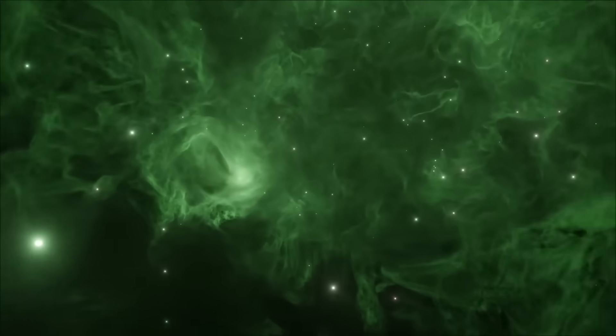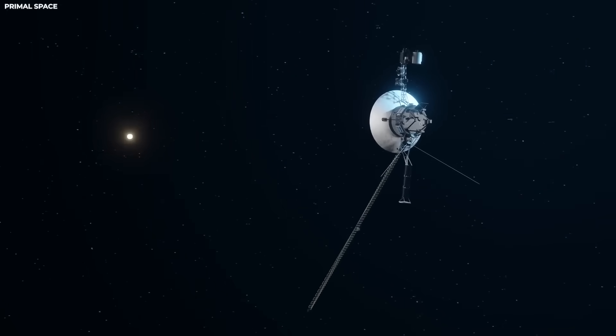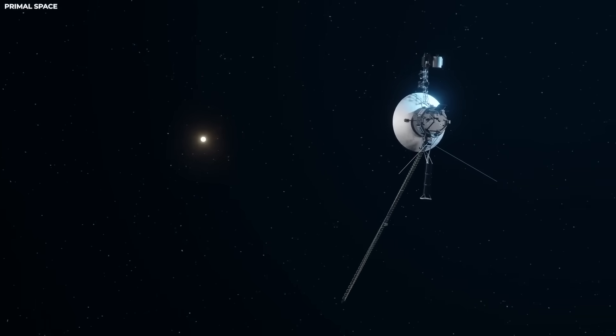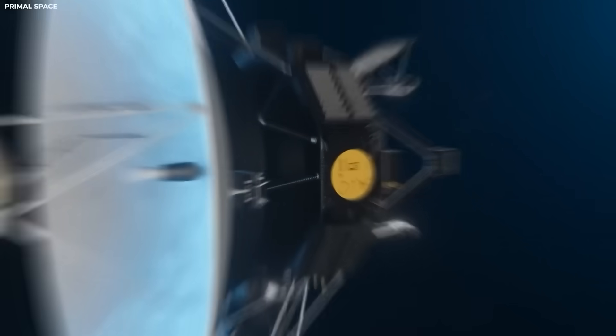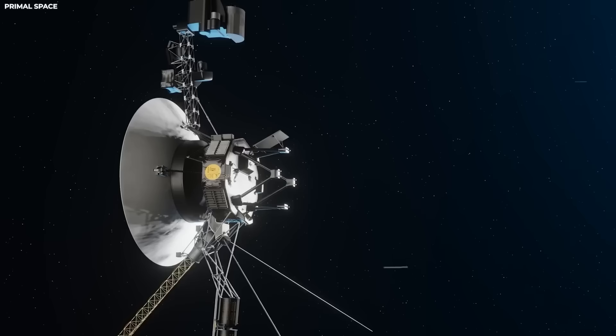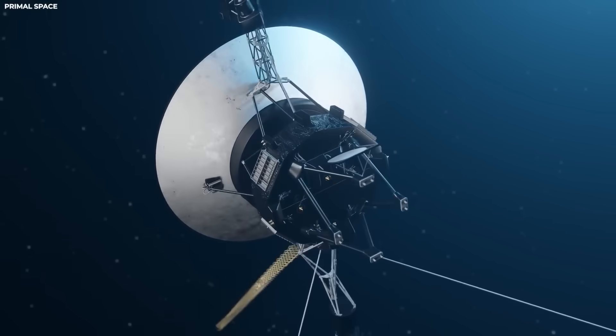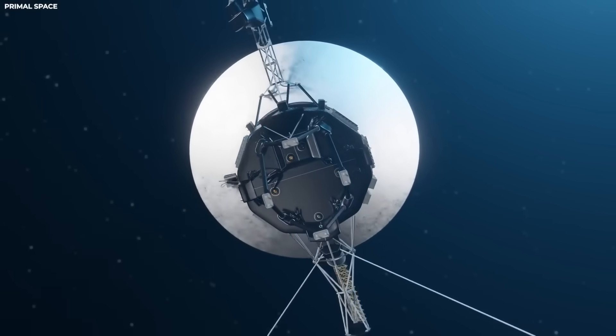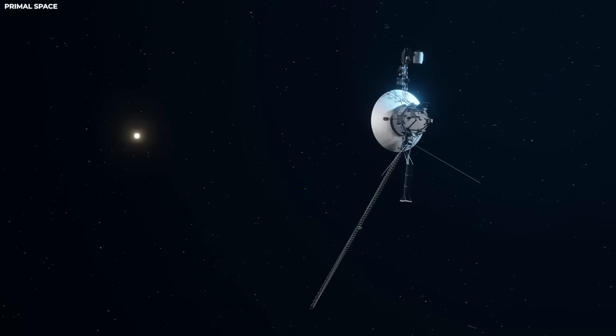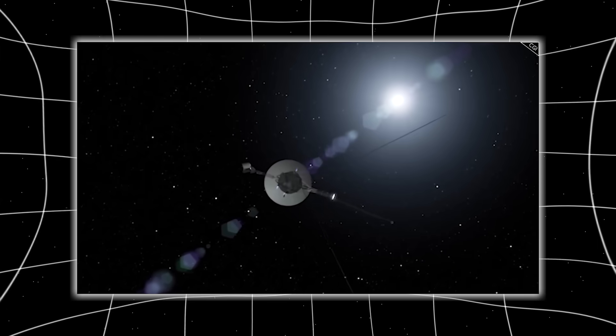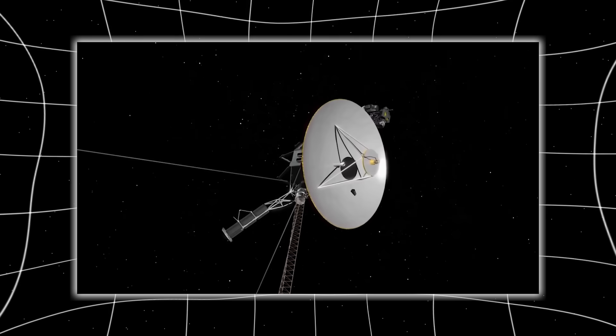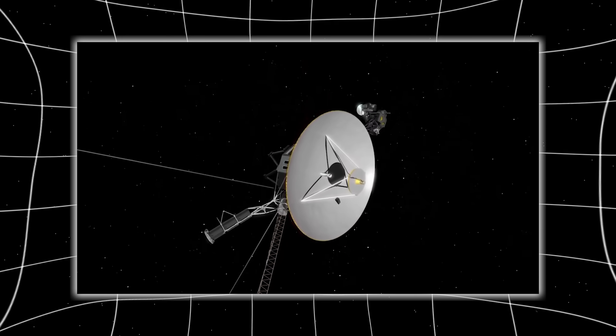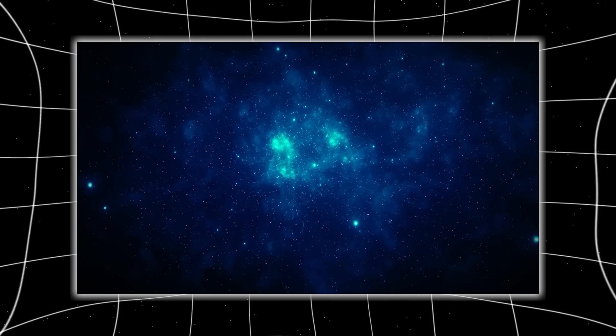Then came the transmission glitch. Voyager 1's antenna, which hadn't moved in over a decade, suddenly reoriented itself by half a degree. The maneuver was tiny, almost imperceptible, yet it required a deliberate command from its attitude thrusters, commands that had not been sent. The spacecraft had turned back, not toward the sun, but toward the direction of the magnetic flux it had been detecting for months. And when it did, the data changed.